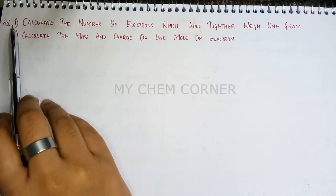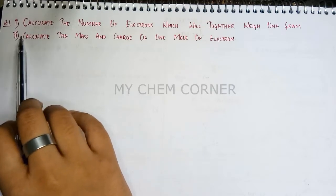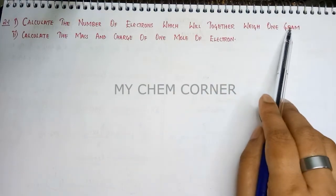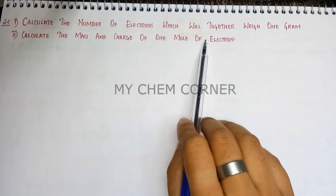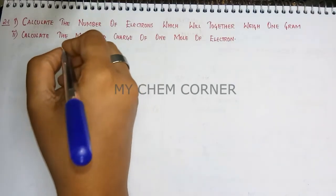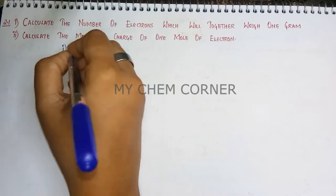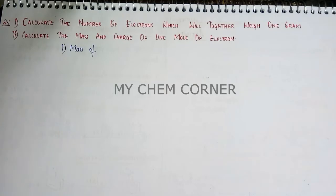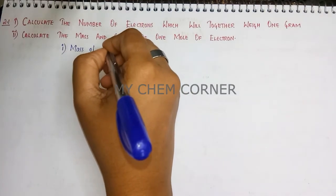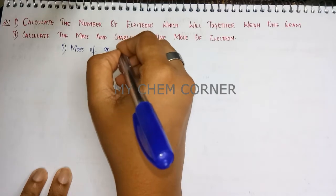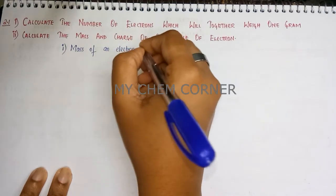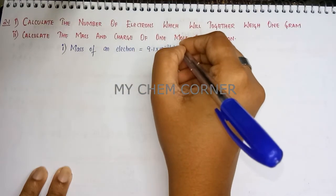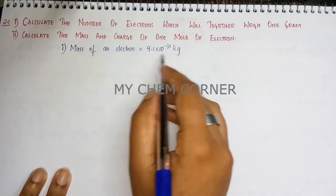Question 2.1 has two subdivisions. The first is: calculate the number of electrons which will together weigh 1 gram. To solve this, we start with the mass of an electron, which equals 9.1 × 10⁻³¹ kilogram. This is a standard value we should know.